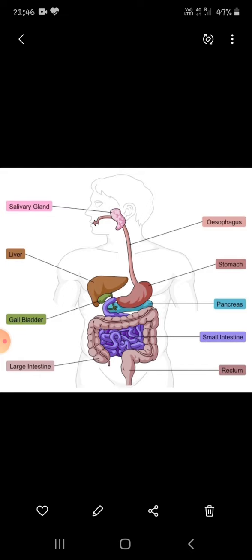Now, how many parts are involved in our digestive system and which are these? You can see in this picture: salivary gland, esophagus, liver, gallbladder, stomach, pancreas, small intestine, large intestine, rectum, and anus.